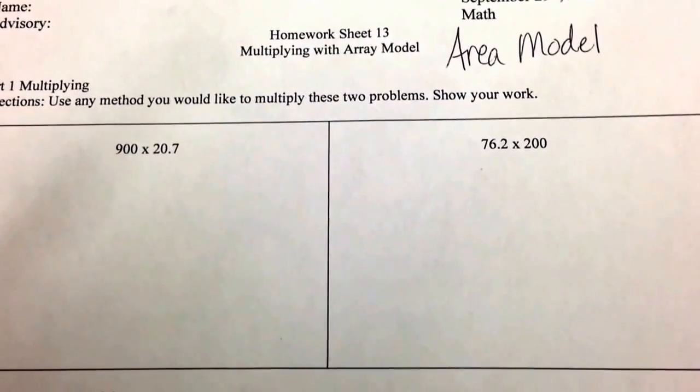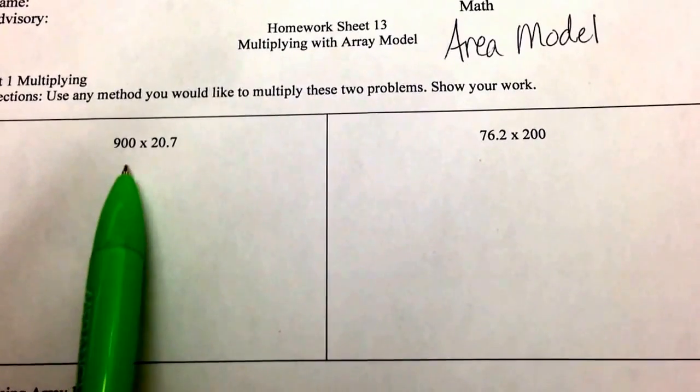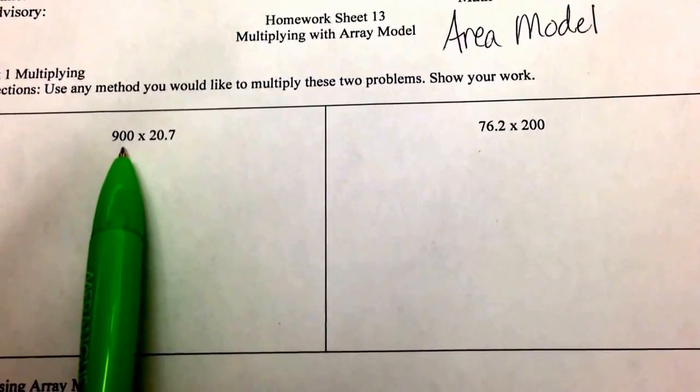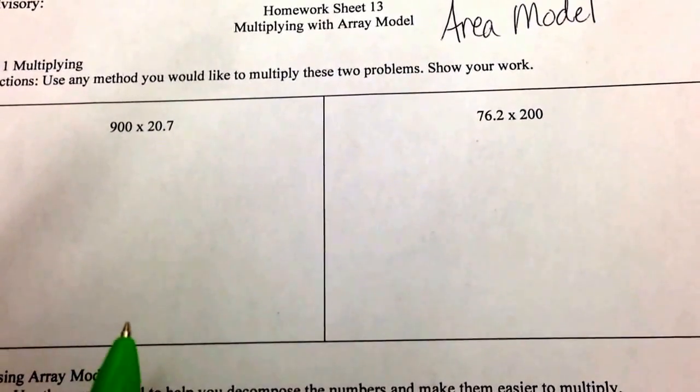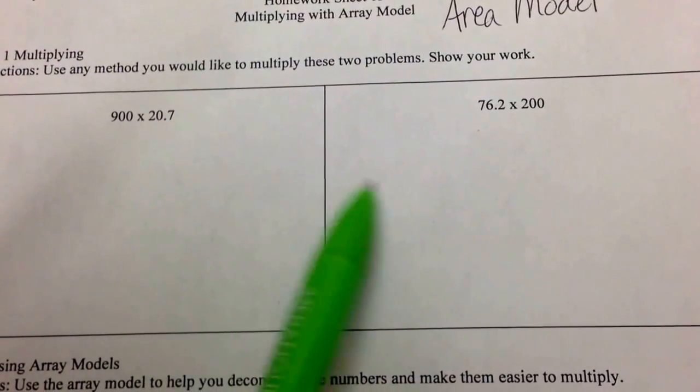So first things first, what do I mean by friendly numbers? Friendly numbers are numbers that pretty much end in zeros because they are much easier for multiplying. Watch what I'm going to do with these two examples.